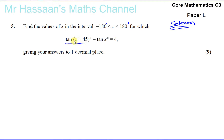When you've got something like this, this is called a compound angle, where you've got x plus something. What we want to do is express this so we don't have tan(x + 45) — we want to have tan(x) on its own.